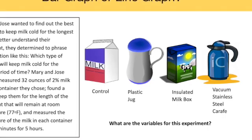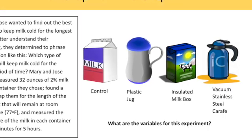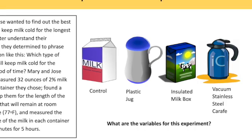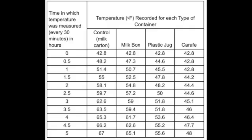The independent variable is the type of container the milk is in, while the dependent variable is the temperature of the milk over time. Taking a look at the data table, we can see that after five hours the control was the warmest at 67 degrees Fahrenheit. The milk box was next warmest at 65.1 degrees, followed by the plastic jug at 55.6 degrees, and the vacuum sealed carafe at 48 degrees.